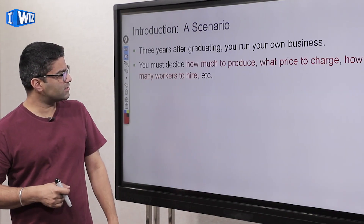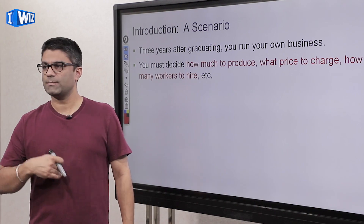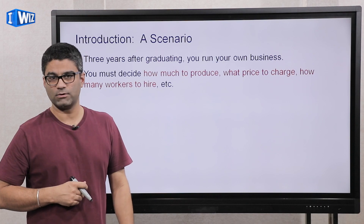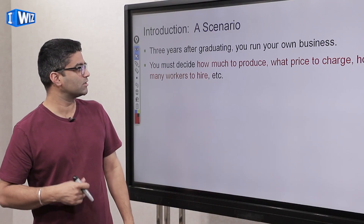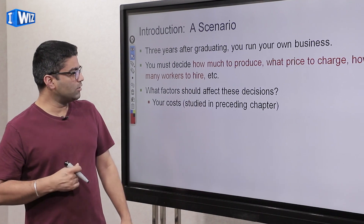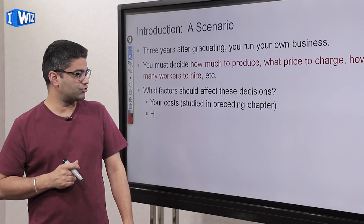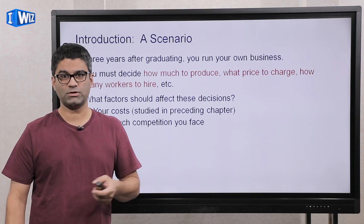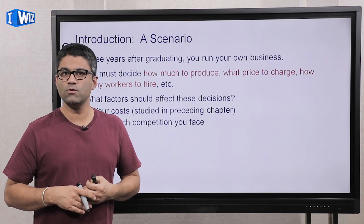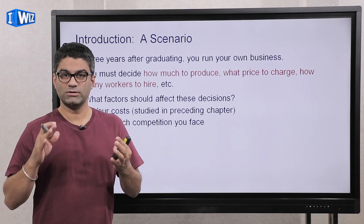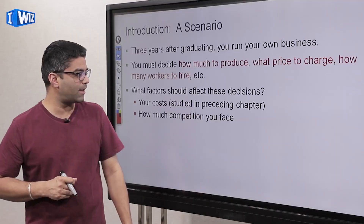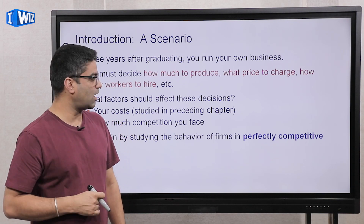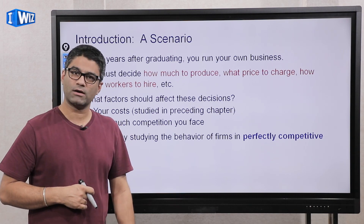When you start your business, you need to decide how much to produce, what price to charge, and how many people to hire. How many people to hire we've talked about in the previous chapter — marginal product of labor, the cost of labor. Now we know how your costs are going to change. The other side is how much you can charge, and that's going to be based on how much competition you face. Are you the only bakery in a city or one of a thousand? We're going to start with a perfectly competitive market and then talk about other kinds of markets in the next couple of chapters.